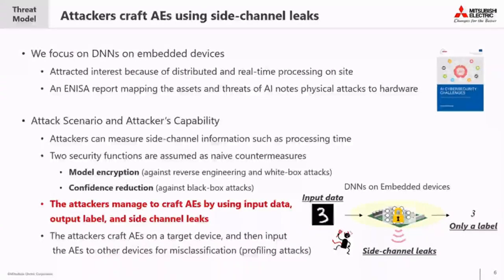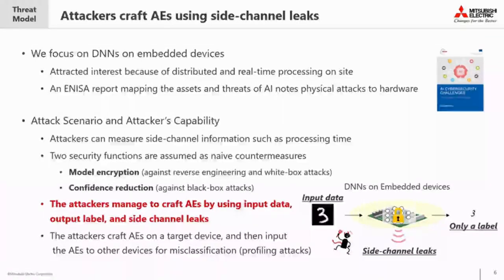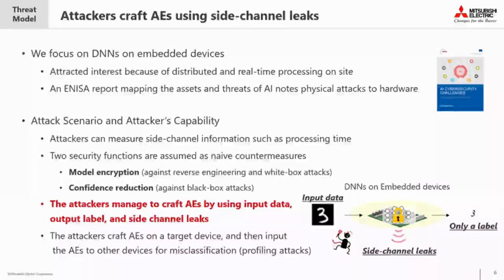This slide shows the threat model. We focused on DNNs on embedded devices, which are of growing interest because of distributed and real-time on-site processing. An initial report maps the assets and threats of AI — including physical attacks to hardware. In the case of embedded devices, attackers can measure side-channel information such as processing time. We assume two security functions for embedded devices: model encryption and confidence reduction. The attacker crafts AEs using input data and side-channel leaks, then inputs those AEs to output devices to cause misclassification.